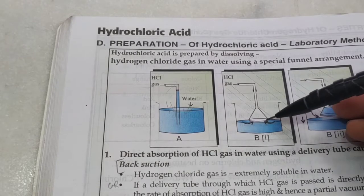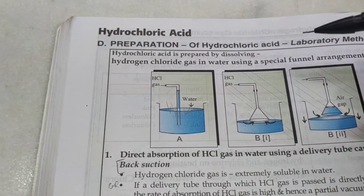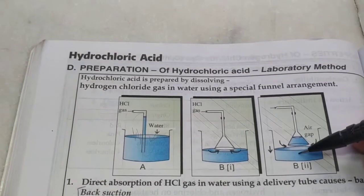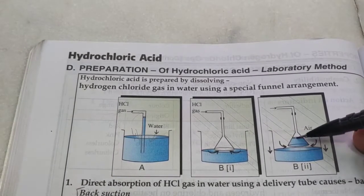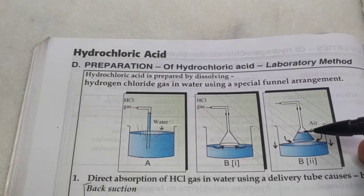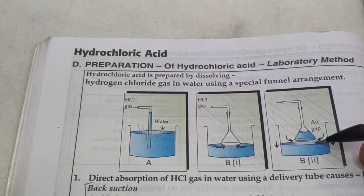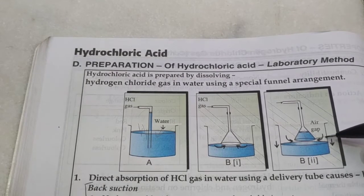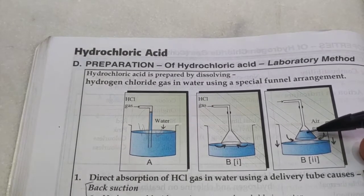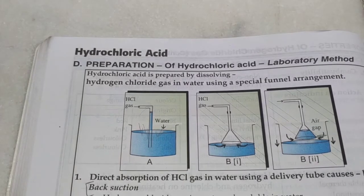The rim of the special funnel just touches the water surface, increasing the surface area for dissolution. When HCl dissolves and water rises up, the level in the beaker decreases, creating an air gap. Pressure inside and outside equalize, then gravity pulls the water back down, the beaker level rises, and contact with the funnel is restored. This cycle continues, minimizing back suction so HCl acid can be produced efficiently.